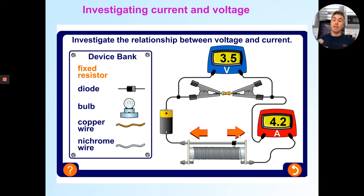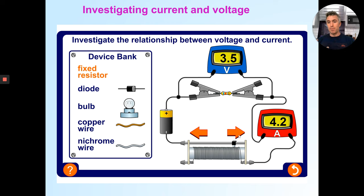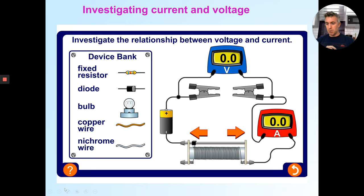I'll leave this PowerPoint on Blueray if you'd like to try it yourself with some of the other things — the diode, the bulb, the copper wire — but I'll look at those in another lesson. Hopefully you've got a series of results now. If I was going to ask you to draw a graph, we would see a relationship between voltage and current. I'm not going to get you to draw a graph today, but if we were at school we would be doing that.